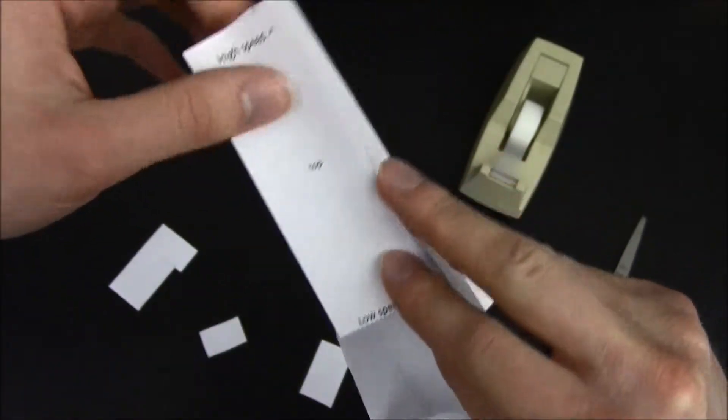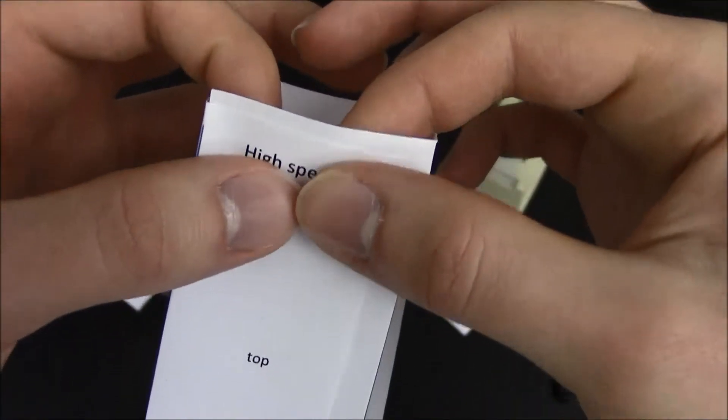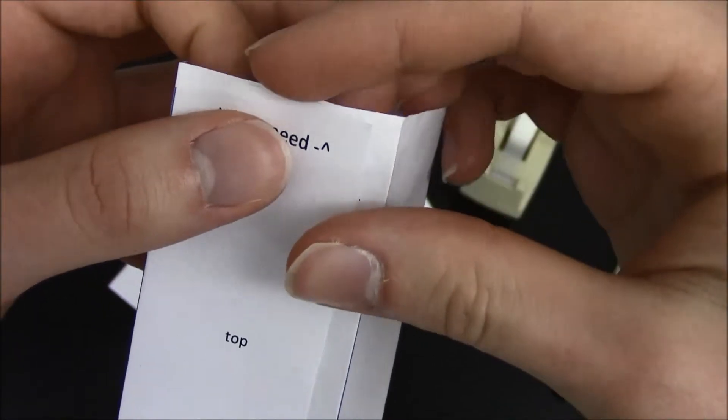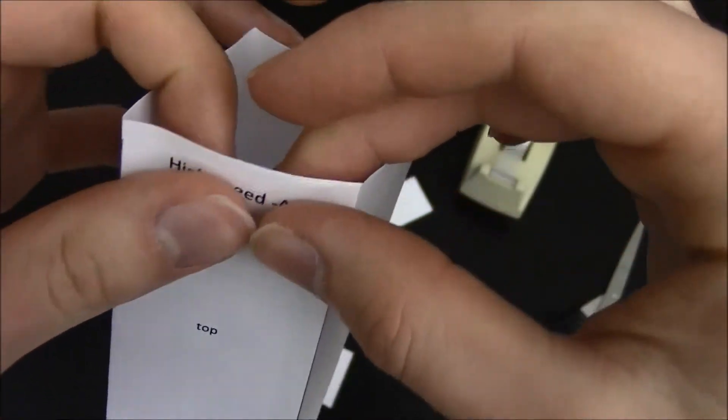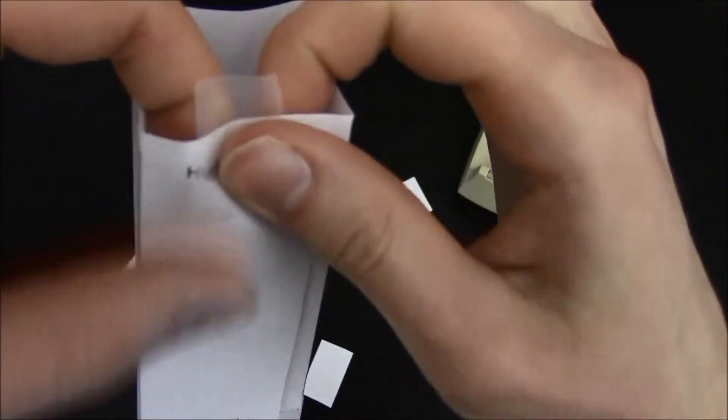Next, slide the under top flap under the top flap. Line them up carefully such that the under top flap meets the opposite edge of the Velocity Initializer. Secure everything with tape.